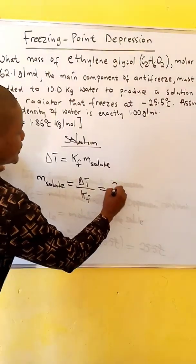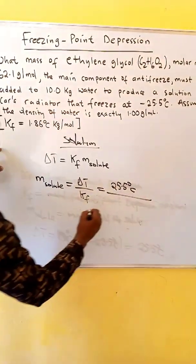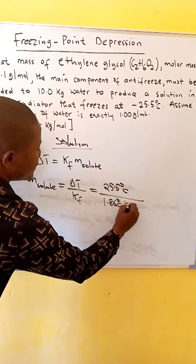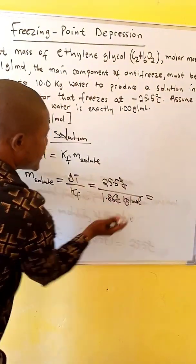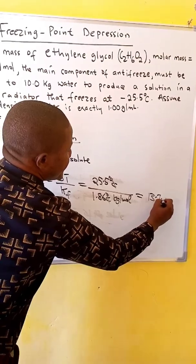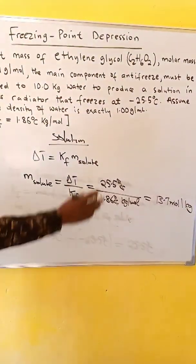Which is equal to our delta T of 25.5 degrees Celsius over Kf 1.86 degrees Celsius kg per mol. So the degrees Celsius cancel, when we divide, we'll get 13.7 mole per kg. This is our molality.